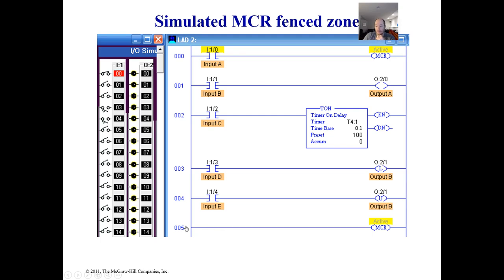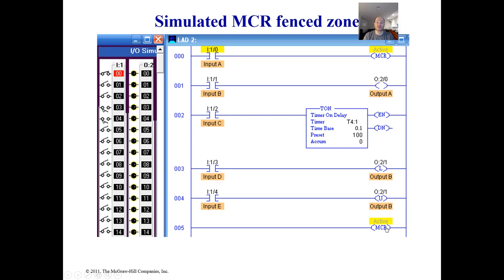One other important thing about the MCR: you can see the end instruction is at the end of the rung, but as I show in the video, please pay attention — you can actually move it and put it anywhere. You can make the MCR control only rungs one, two, three, and four, with others outside the fenced zone. Also very important: the end mate here cannot have an input in front of it. It is only looking for where to end the MCR zone. I have a video on the MCR, and you'll use these in labs and on your final project — it will be mandatory.